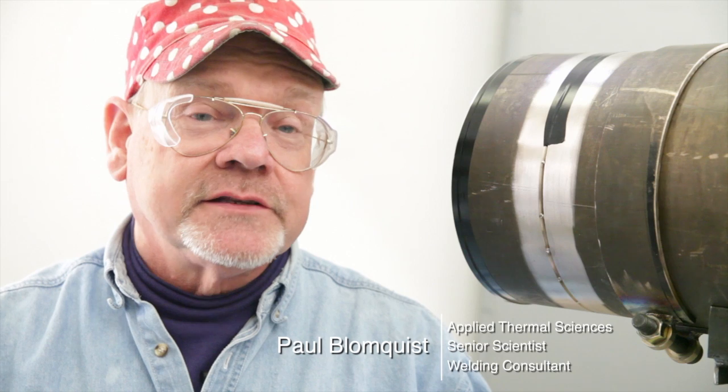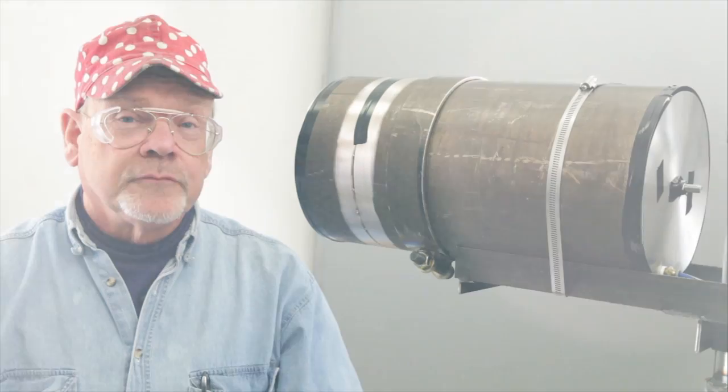Whenever pipe joints can be rotated so that they can be welded in the downhand position, that's certainly preferable and a whole lot easier. In many cases, however, pipe must be welded in a fixed position, and we're going to show welding in a horizontal fixed position.